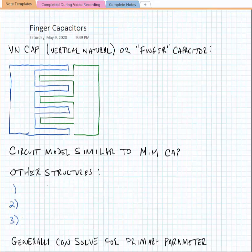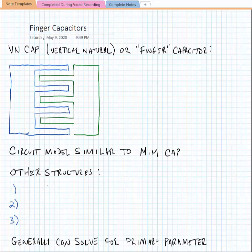We can also make a parallel plate capacitor using lateral metal in what they call a VN cap or a vertical natural cap and sometimes we also call this a finger cap because it looks like interdigitating your fingers.